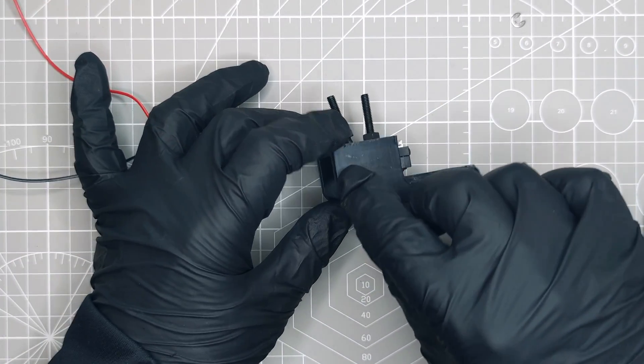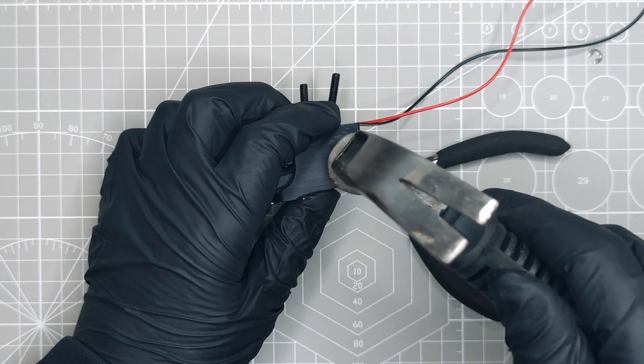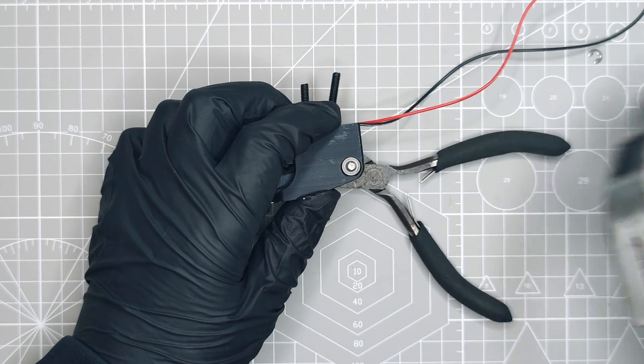Once the shaft is fully in place, I can insert the second ball bearing. I once again use the pliers to support the ball bearing and I just tap gently on the shaft to push the ball bearing in.